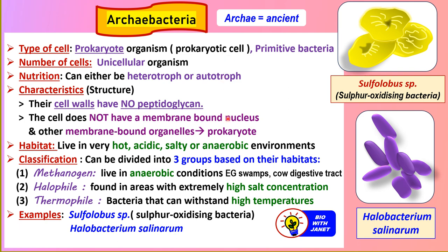The prokaryotic cell does not have a membrane-bound nucleus and also doesn't have membrane-bound organelles like mitochondrion, endoplasmic reticulum, Golgi apparatus, and lysosomes. In terms of number of cells, archaebacteria are unicellular organisms — single-celled organisms, like these rod-shaped cells here.